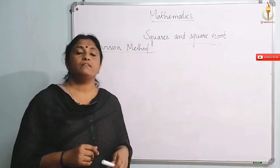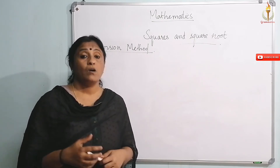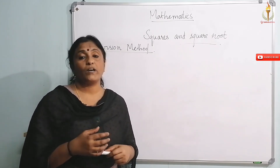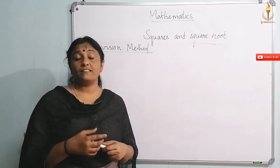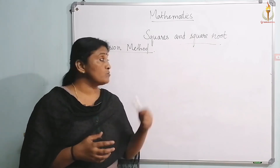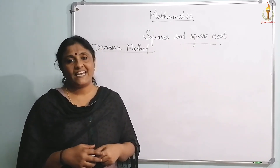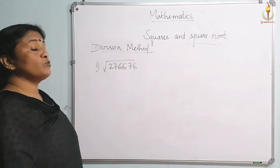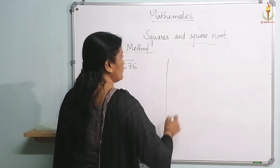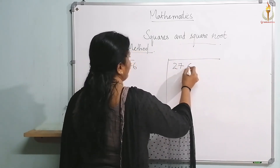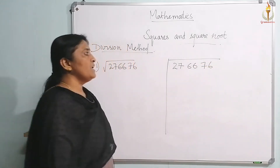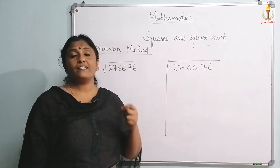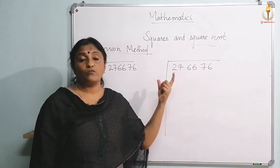Now moving on to the division method. This division method can be used to find the square root of a perfect square as well as numbers which are not perfect squares — though finding the square root of non-perfect squares will be done in the next video. Find the square root of 276676. The first step is pairing the digits from right to left, giving pairs: 27, 66, 76.